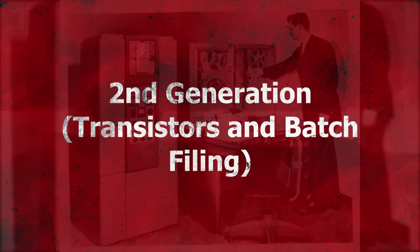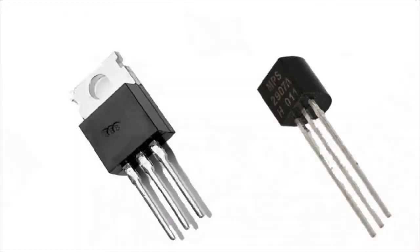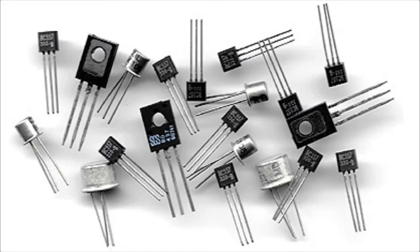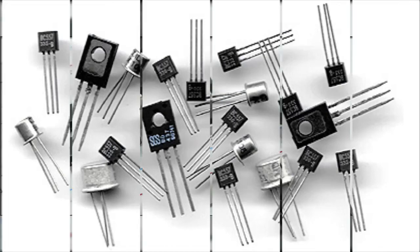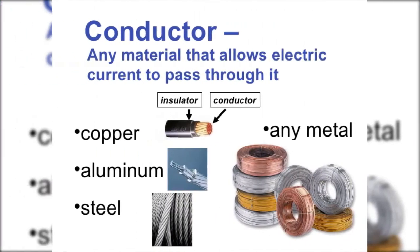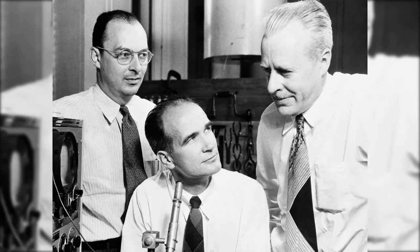Second generation of computers, 1952 to 1960, transistors and batch processing. These computers used transistors instead of vacuum tubes and were better in many ways: smaller size, greater speed, and lower cost. Transistors are more reliable, energy-efficient, and capable of conducting electricity faster. Just like vacuum tubes, transistors are switches or electronic gates used to amplify or control current. They are called semiconductors because they contain elements which lie between conductors and insulators. Transistor semiconductors were invented at Bell Laboratories in 1947 by William Shockley, John Bardeen, and Walter Brattain, but did not see widespread use until the mid-1950s.